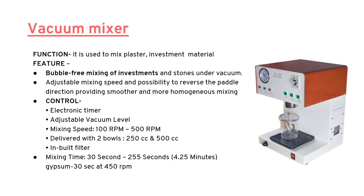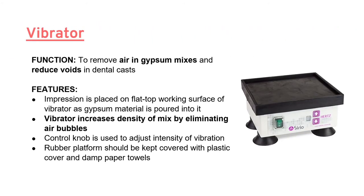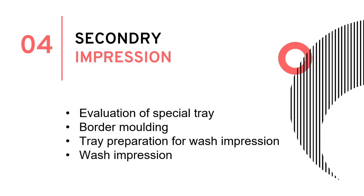The vibrator is equipment used to remove air and reduce voids during pouring of the cast. During pouring, the impression is placed on the flat-top working surface of the vibrator as gypsum material is poured into it. The vibrator increases the density of the mix by eliminating air bubbles. Now we are ready to take the secondary impression.